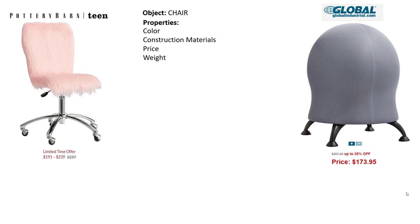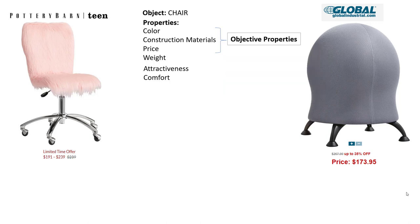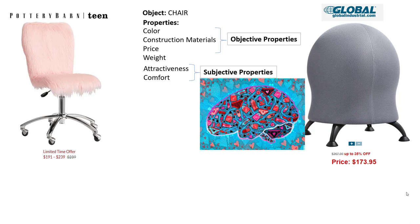What other things really influence whether or not an individual purchases a particular chair? Two likely candidates are the attractiveness of the chair and the comfort of the chair. When we look closer, we realize that attractiveness and comfort are a bit different than the previous four. The first four — color, construction materials, price, and weight — are what we call objective properties. They stand independent of any one individual's assessment of the chair.